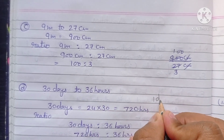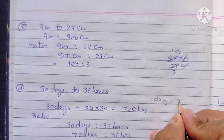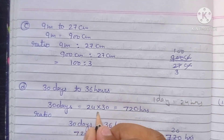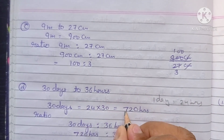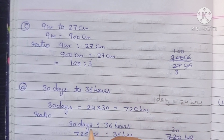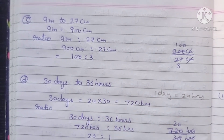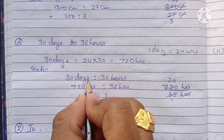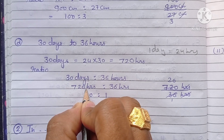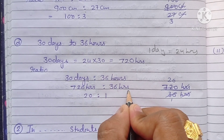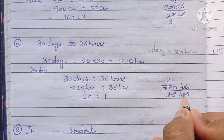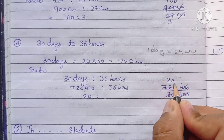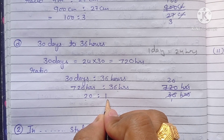Next part: 30 days to 36 hours. We convert 30 days to hours: 30 days multiplied by 24 hours gives 720 hours. So the ratio is 720 hours to 36 hours, which simplifies to 20:1.